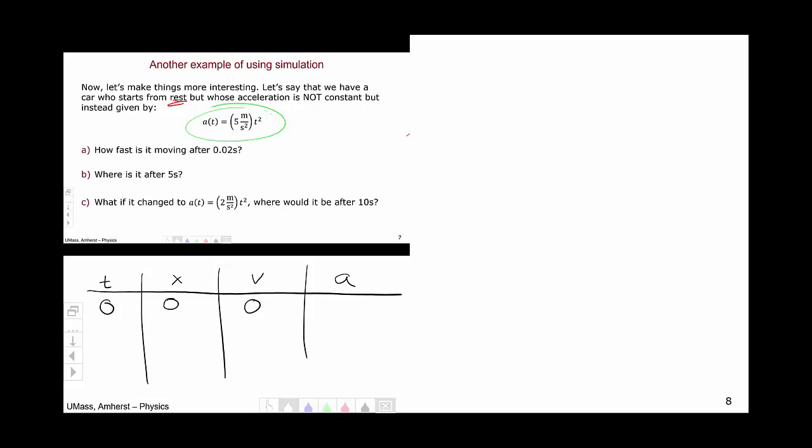And now we need to solve for the acceleration. In this case, we have a formula for it. Later we'll use forces and information about springs to solve for this, but at the moment I'm just giving you a formula to give us something to practice with. So that's going to be a at t equals zero, which is 5 meters per second squared times zero squared, or a is zero at t equals zero.